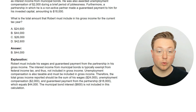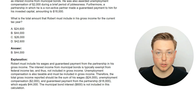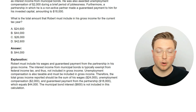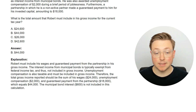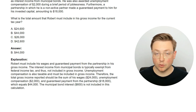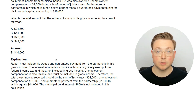Here's the answer: $44,000. Robert must include his wages and the guaranteed payment from the partnership in his gross income. Guaranteed payments from partnerships are kind of like a salary — they will get this money no matter how well the partnership does, separate from the total income of the business. The interest income from municipal bonds is typically exempt from federal income tax and thus not included in gross income. Unemployment compensation is also taxable and must be included in gross income. So the total is wages plus unemployment compensation plus the guaranteed payment, excluding the municipal bond interest, totaling $44,000.